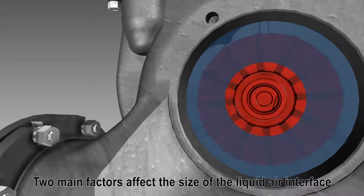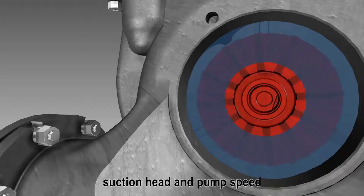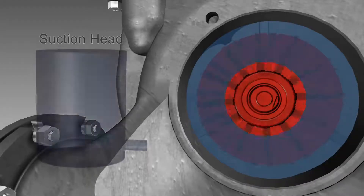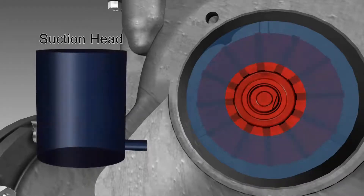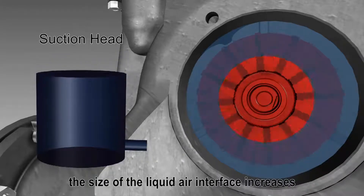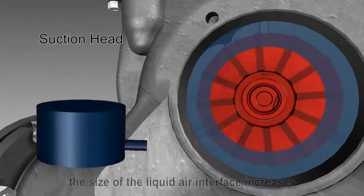Two main factors affect the size of the liquid-air interface: suction head and pump speed. As the suction head decreases, the size of the liquid-air interface increases.